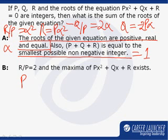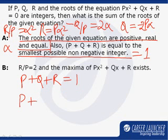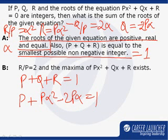So, if P plus Q plus R is 1, I can substitute the values of Q and R which I have got earlier, which means P plus P alpha square minus 2P alpha has to be 1.